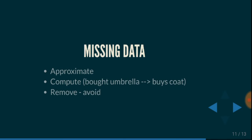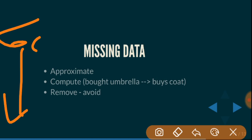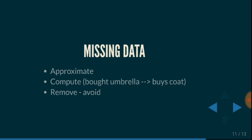The next term is missing data. You will always have some missing data. The best option is to approximate or even compute the missing data — if related processes show that when feature A is present, feature B follows, you can compute what feature B would be. This is better than working with incorrect or missing data. If you're thinking of simply removing the missing data, try to avoid it and put in the extra effort to complete it instead.